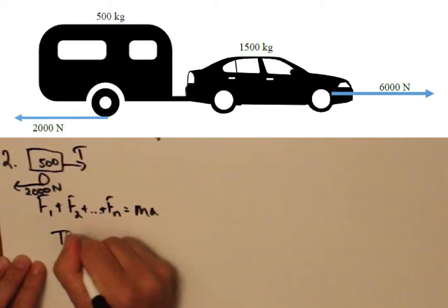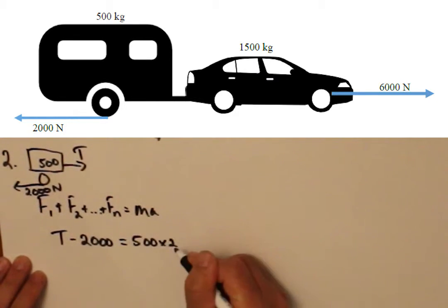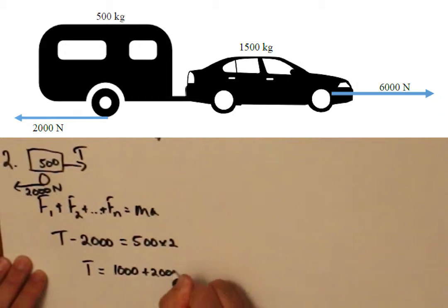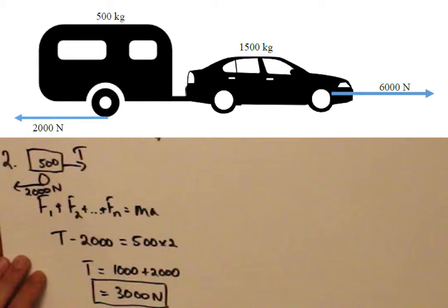Isolating the caravan once again, there are two forces acting. Tension minus 2000 must equal Ma, 500 times 2. Solving for the tension gives us 3000N.